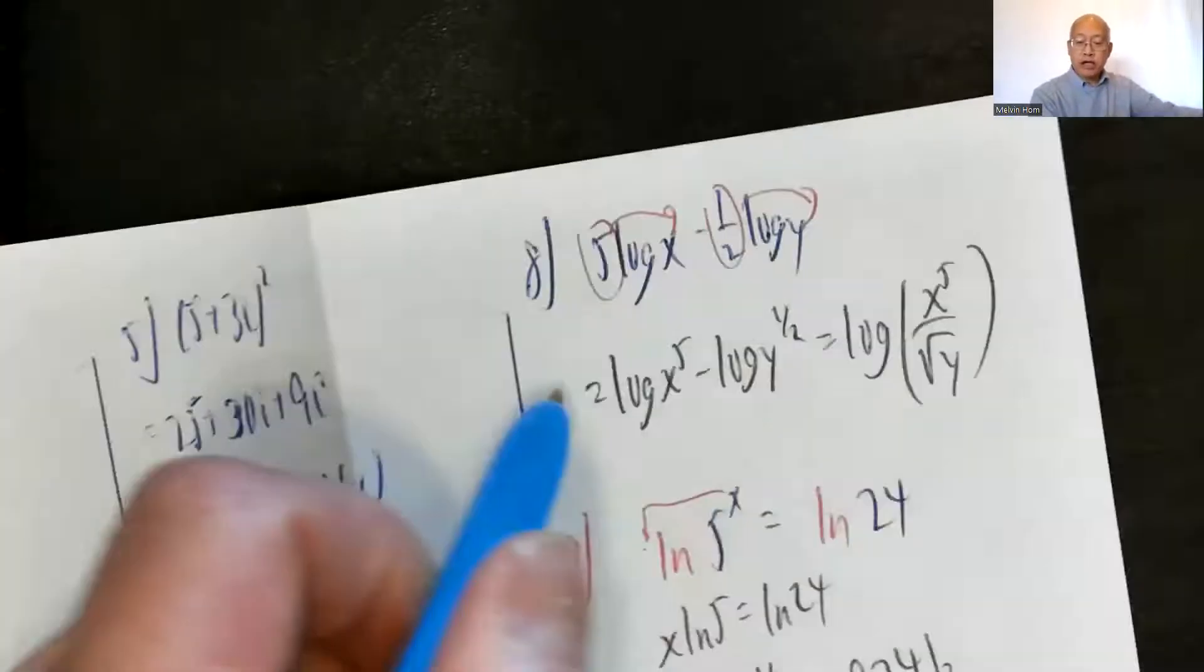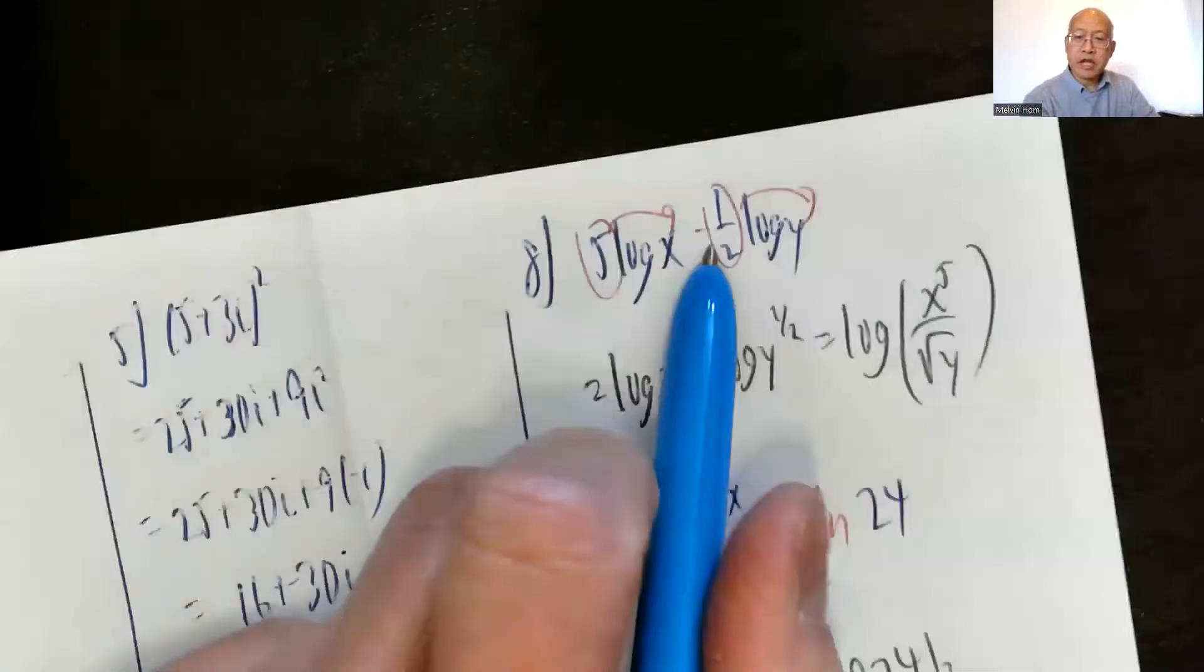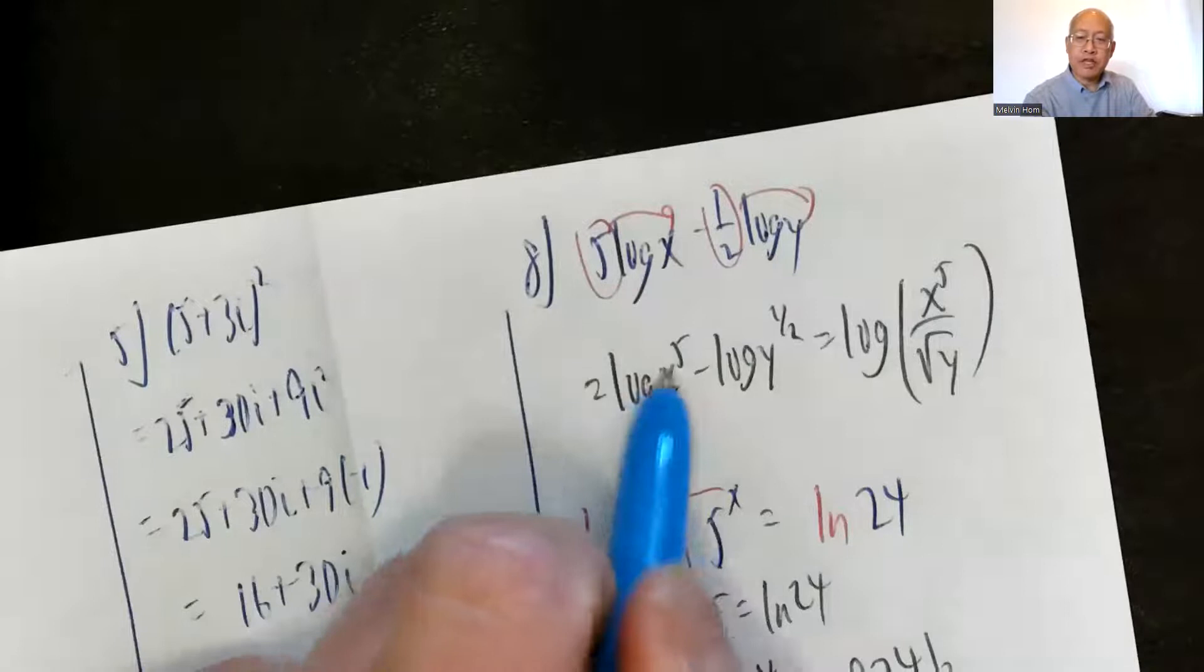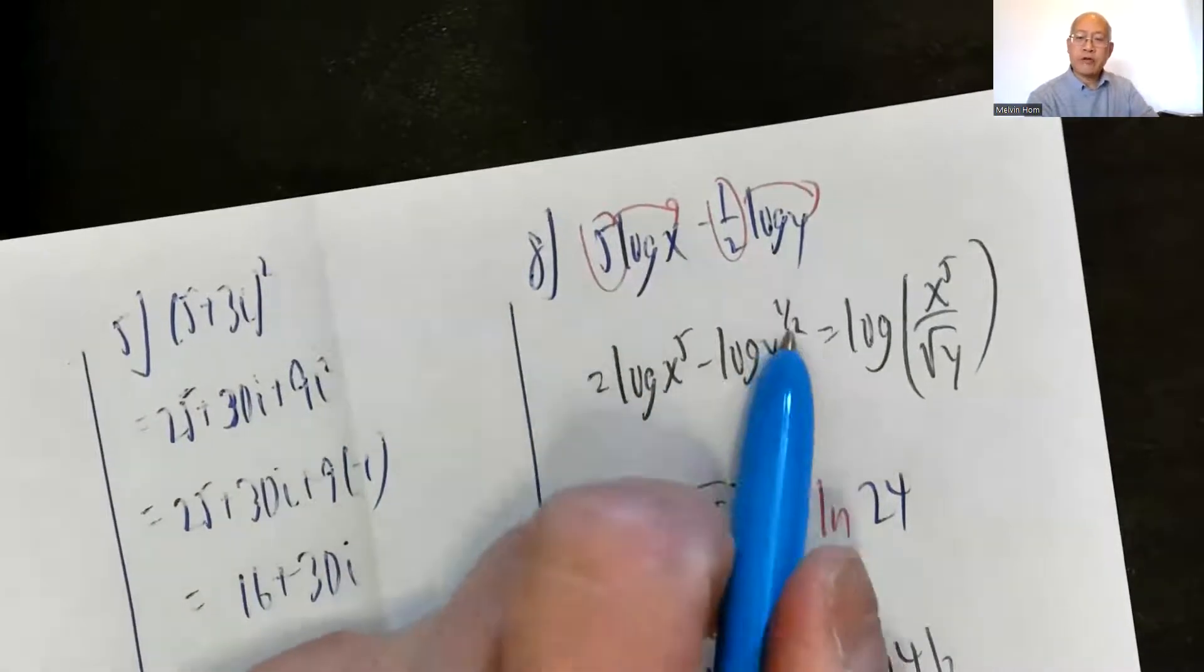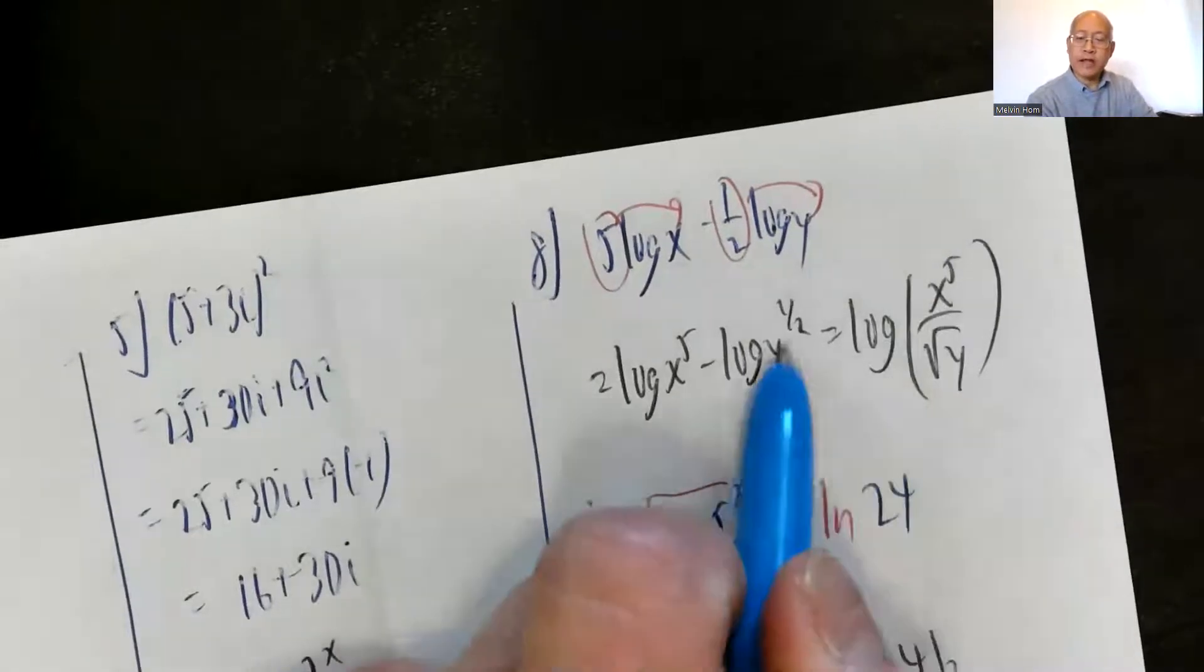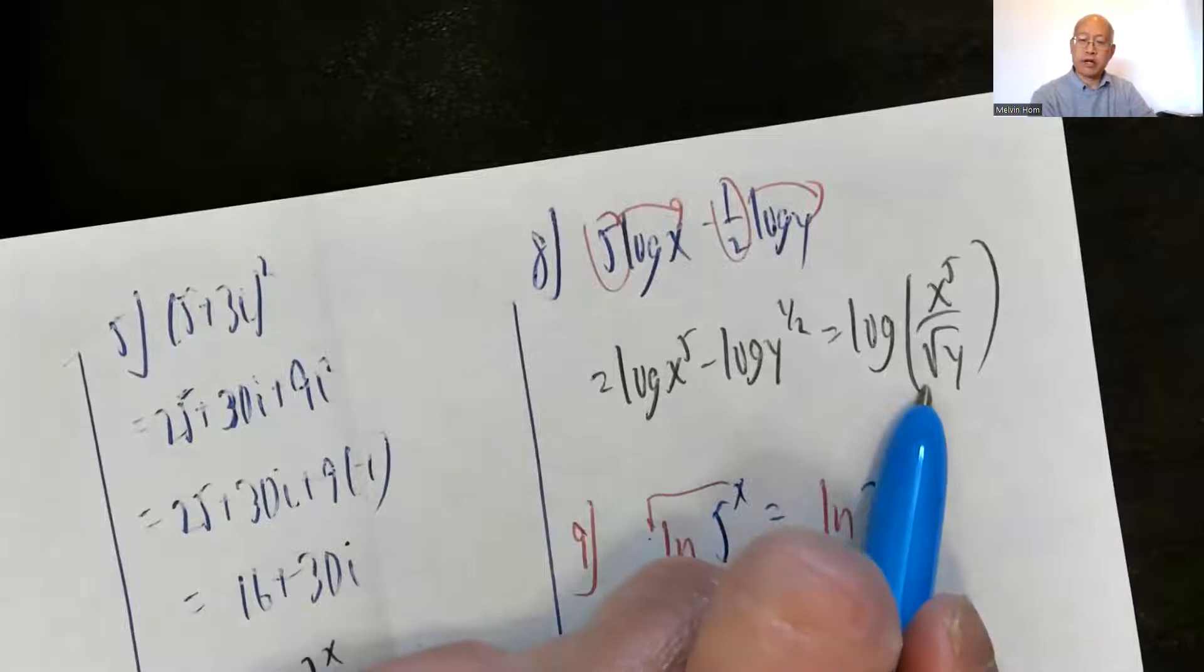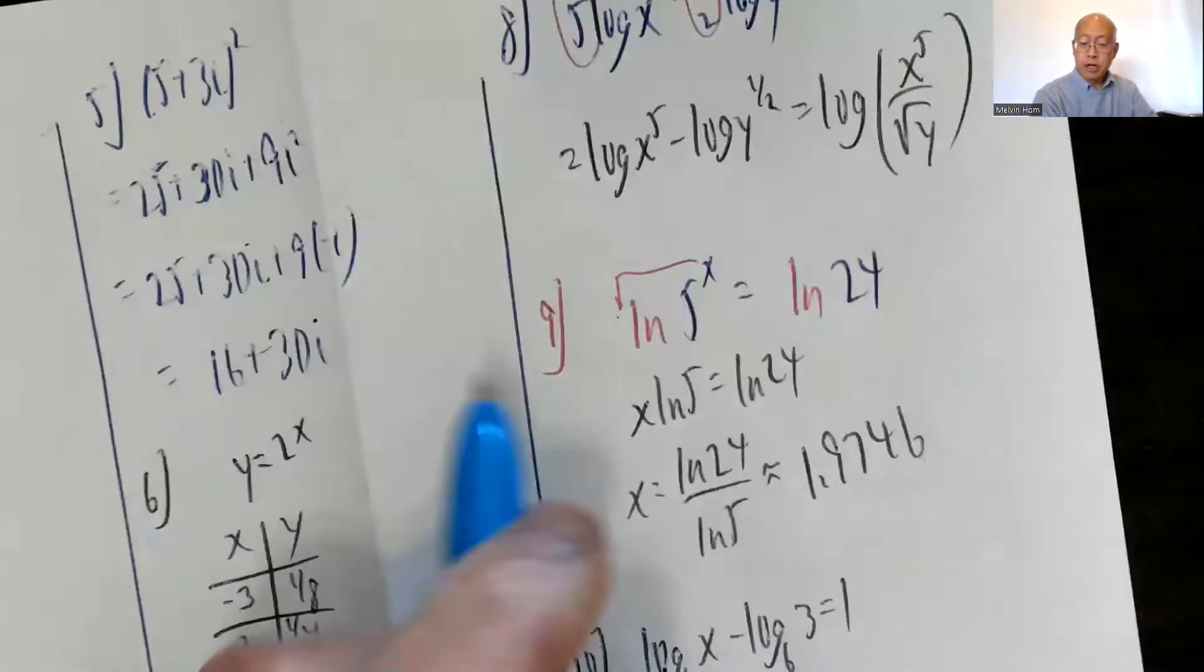Number 8: Write it as a single logarithm. The 5 climbs up to here. The half climbs up to here. So log of x to the 5th minus log y to the 1 half. A minus sign means you take the log of the quotient. So log of x to the 5th over y to the 1 half. Y to the 1 half means square root of y. You should write it as a square root of y. That's considered simplified.